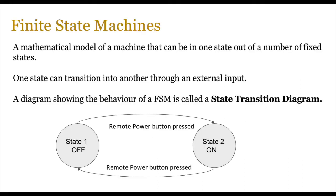Finite state machines are mathematical models where states can transition from one to another, but they need to be acted upon by an external input. An FSM on its own is not a diagram — it's a machine, a mathematical or conceptual model. The state transition diagram is the diagrammatic version of an FSM.